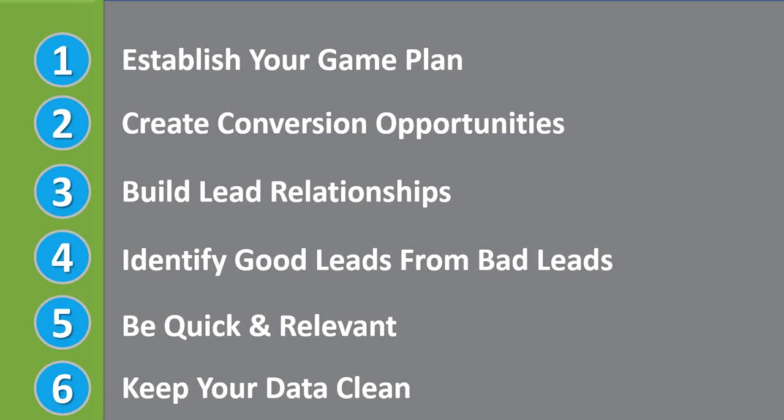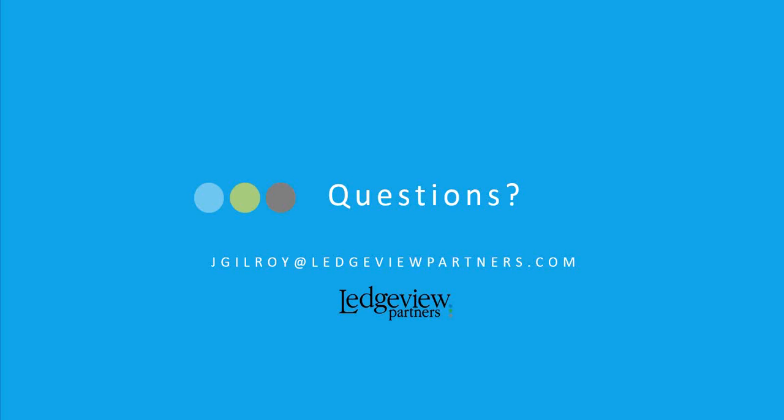Let's summarize the six steps covered today to get you on your way to establishing a lead management plan within your organization: number one, establish your game plan; two, create conversion opportunities; three, build lead relationships; four, identify good leads from bad leads to pass to the sales team; five, be quick and relevant in your follow-up once in the sales team's hands; and six, keep your data clean. That wraps up today's webinar — if you have any questions, feel free to submit them in the question pane and we'll follow up after the webinar.